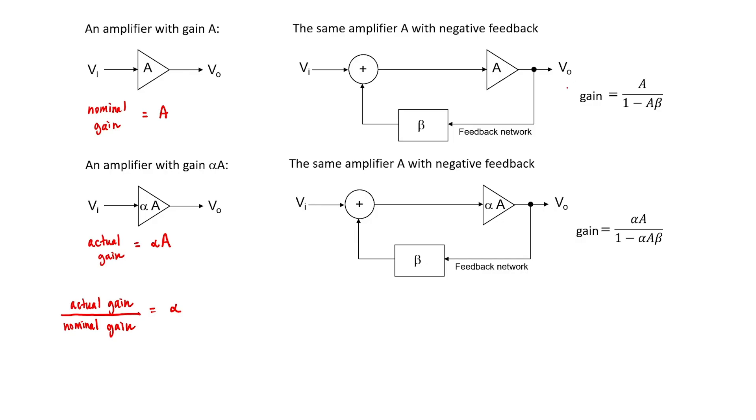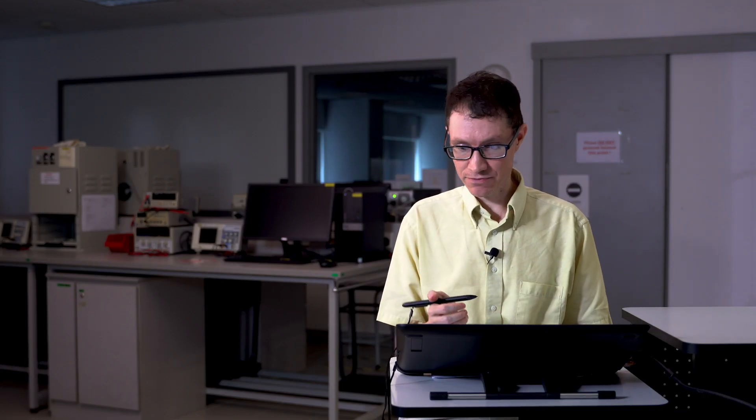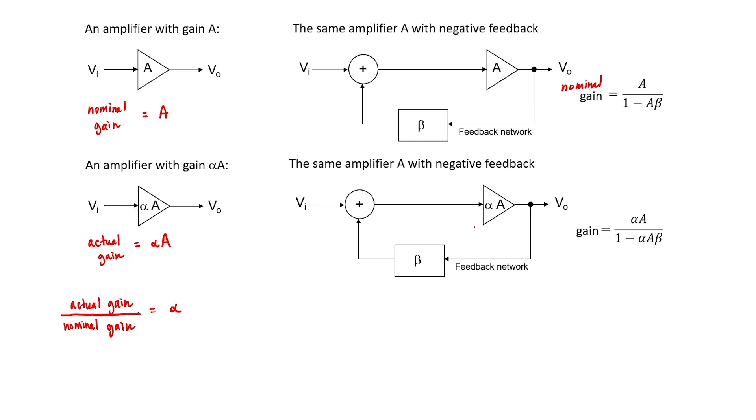If I put amplifier A into a feedback loop, then my nominal gain is given by A divided by 1 minus A beta, and remember that A beta is negative. If I take a similar amplifier, but with a tolerance that causes it to deviate from the gain A, and put it into a feedback network, then I would get a different gain through the feedback network. Let's again take actual gain and divide it by the nominal gain to find out how the gain might vary as a result of the poor component tolerance. After some cancellation, we get a result.